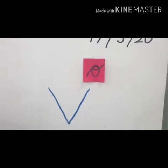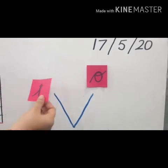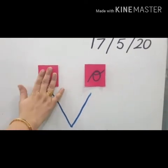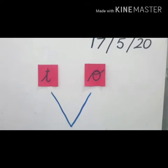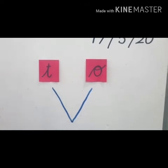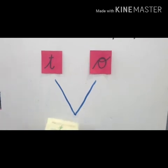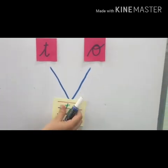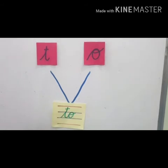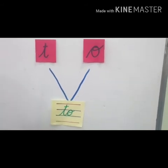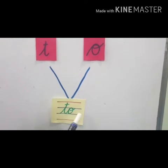Similarly, let us use another consonant with the letter O. We will use letter T. When we join T and O, we get T, O, do. Repeat again: T, O, do.